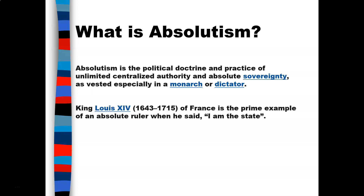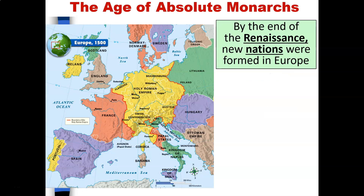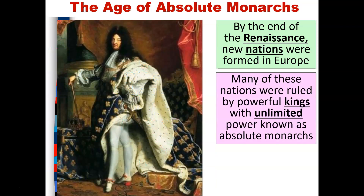and absolute sovereignty as vested especially in a monarch or a dictator. King Louis the 14th of France is the prime example of an absolute ruler when he said 'I am the state.' The age of absolute monarchs was very important because it helped rulers gain power and create powerful nations. By the end of the Renaissance, new nations were formed in Europe, ruled by powerful kings with unlimited power known as absolute monarchs.